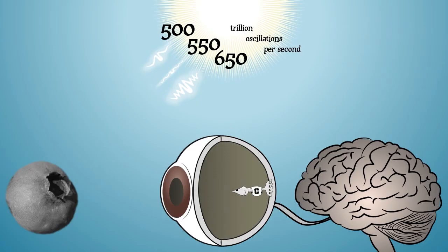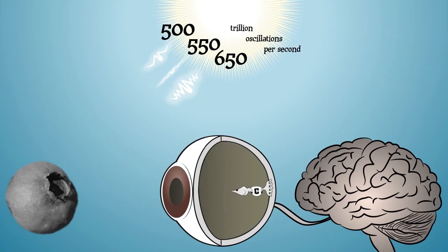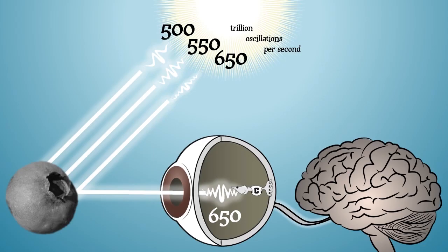A blueberry absorbs most photons, but reflects those that oscillate about 650 trillion times per second. So this time it's team C that reacts strongly, and the result is that you see blue.